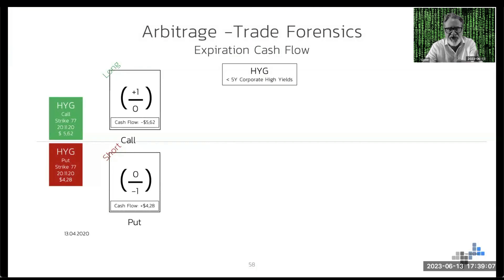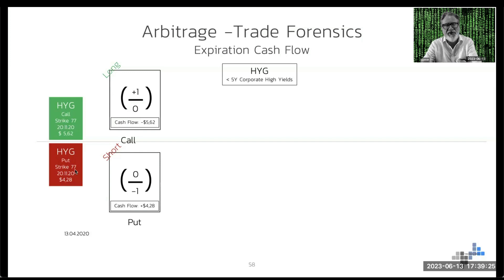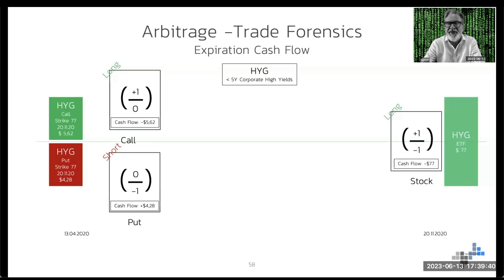To make it a bit easier, I'm changing the design now. The green box is the call we had on the screen on the 13th of April 2020, and the put we also had on the screen on the 13th of April 2020. The call is long with a strike of 77 — and we always have to work with the same strikes when we look for an arbitrage like that. They both expire on the 20th of November 2020. You could trade the call for $5.62 and the put for $4.28. And we know that at maturity in November, the cash flow there will be $77, because we've traded the 77 strike.